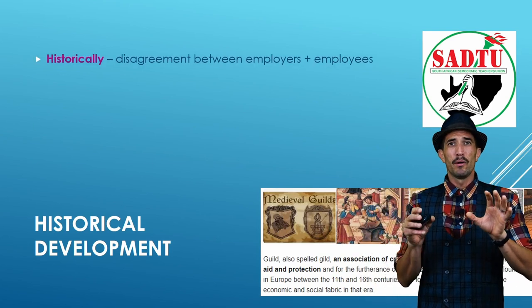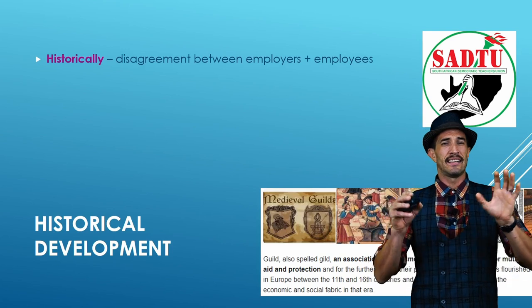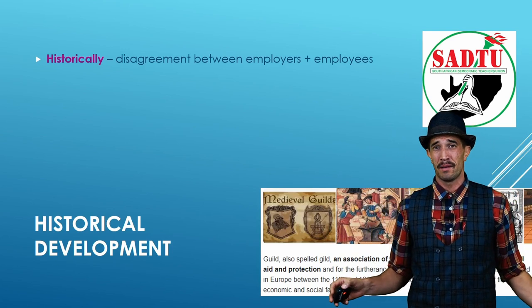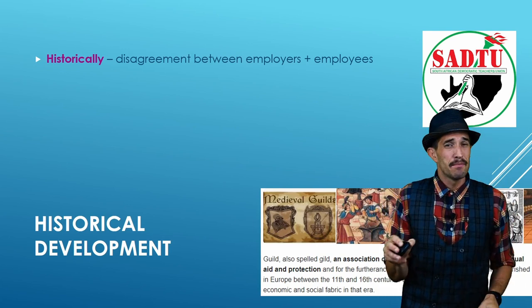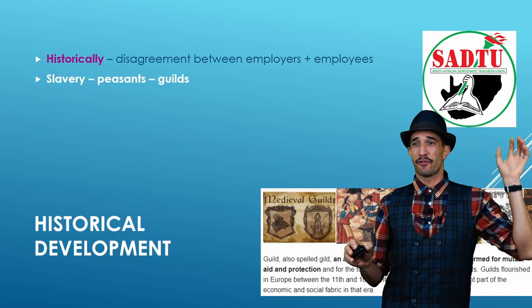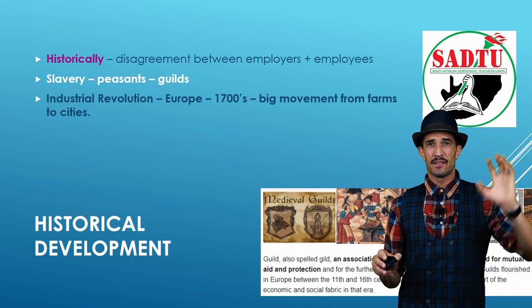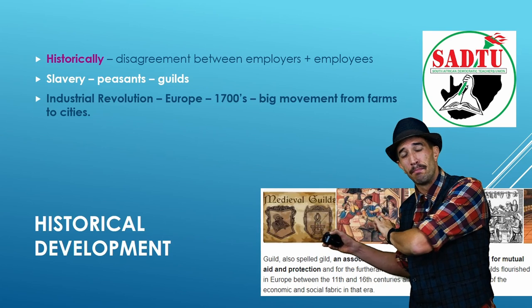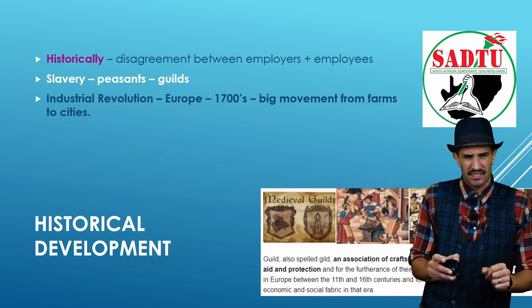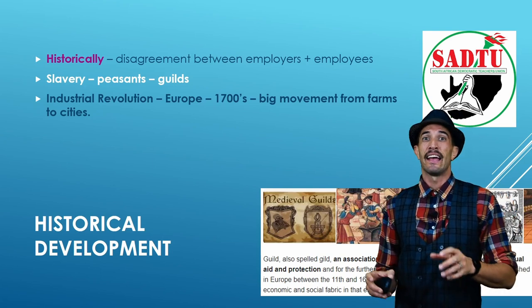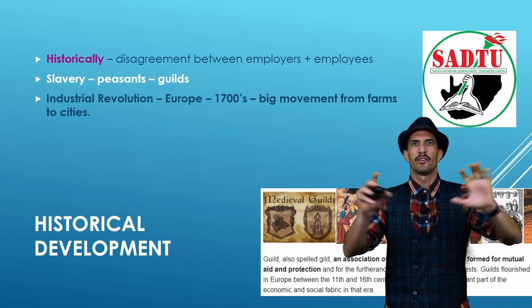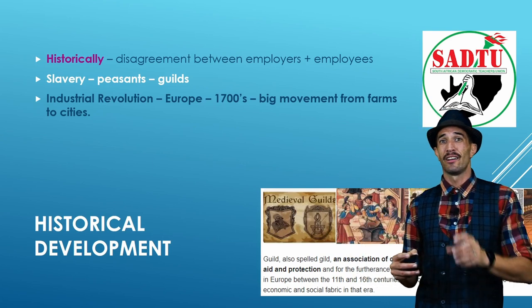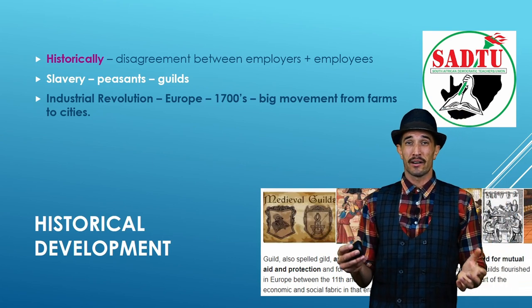Trade unions come from medieval times, where people were not treated well. In the guilds, workers were treated as slaves — they had to do manual labor with little to no payment. Essentially, it is a disagreement between employers and employees, stemming from the slavery of the guilds. It formally started in Europe in the 1700s with the Industrial Revolution, when there were big movements of people leaving farms, wanting to find jobs, earn money, and build a better life.